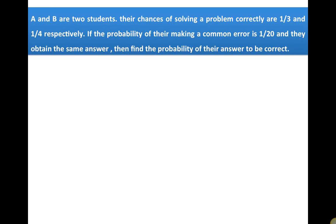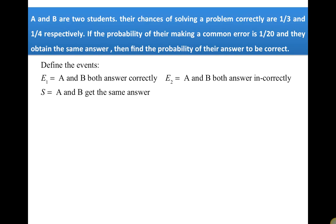Two students working on the same problem can get the same answer if they both answered correctly or if they both answered incorrectly. We define two events: E1 where A and B both answer correctly, and E2 where A and B both answer incorrectly. S is the related event that A and B get the same answer.